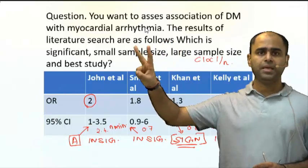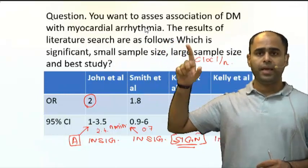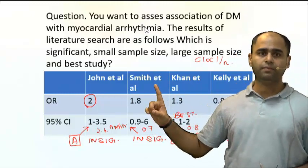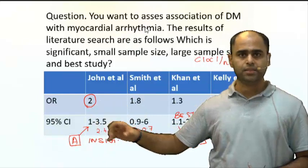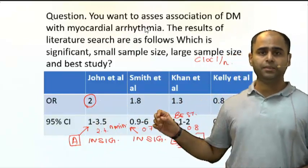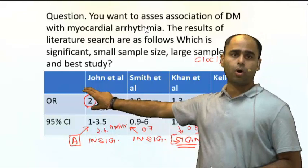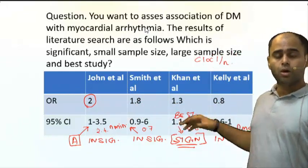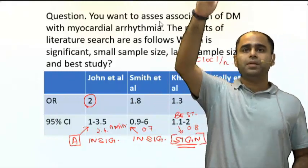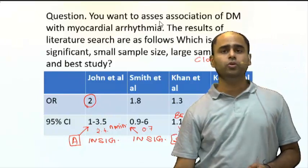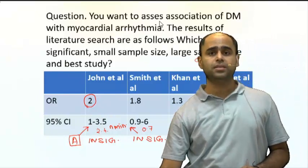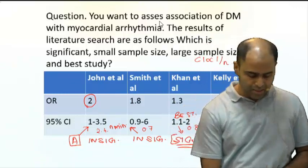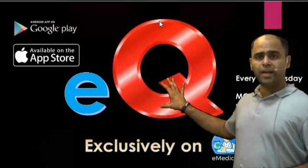To revise: there are three rules — A, B, and C. Rule A: if the CI touches the null value, it is insignificant; the null value for odds ratio and relative risk is 1. Rule B: more the distance of the point estimate from 1, more the significance. Rule C: smaller the CI, larger the sample size. Always apply these in sequence — A, then B, then C.